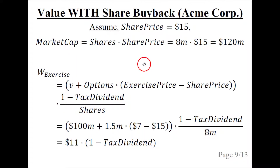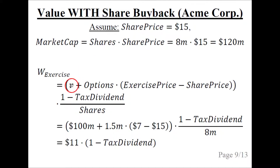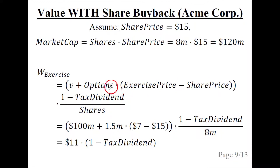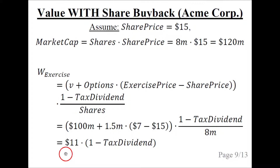The value with a share buyback is calculated as follows. We assume the share price is $15, which means the market cap is 8 million shares multiplied by $15, giving $120 million. Recall that the value V is $100 million, which is slightly less than this market cap. So the value with the stock options exercised and a share buyback to offset the diluting impact uses the formula from a previous slide: V is $100 million, options is 1.5 million, exercise price is $7, share price is $15, number of shares is 8 million, and we leave dividend taxation as a variable. The result is a per share value of $11.